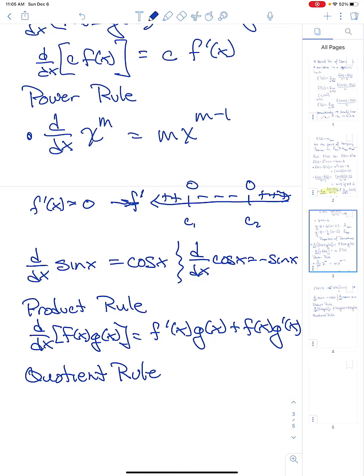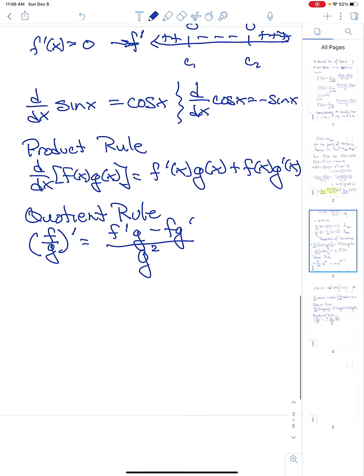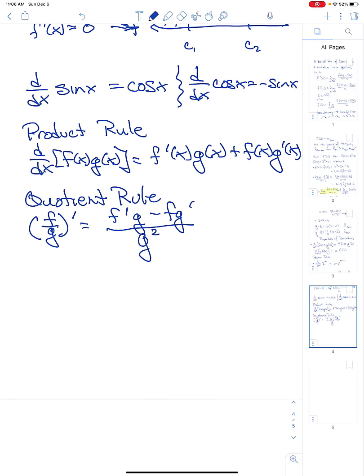The quotient rule is similar. Now, I'm going to use shorthand notation here: f prime g minus f g prime all over the square of the denominator. Now, the quotient rule was important because it allowed us to then go and develop all of the trig derivatives.